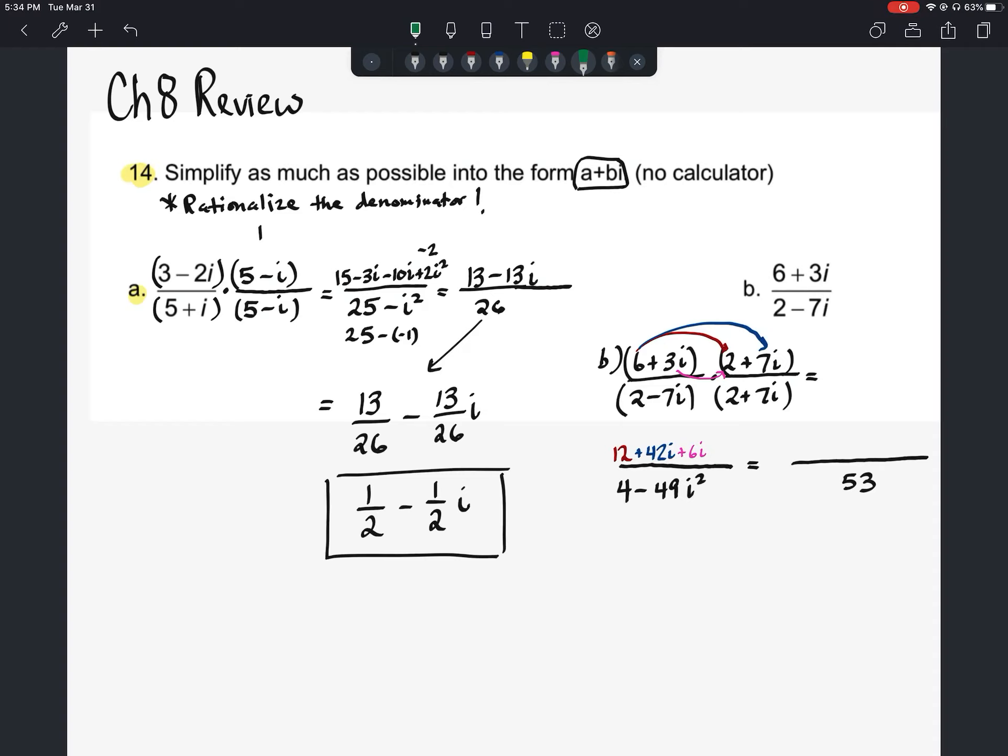And then the last one there, we've got positive 3i times positive 7i would be 21i squared, which would end up being minus 21. And then let's just combine the like terms. Negative 21 and 12 should give us negative 9. And then 42i plus 6i would be 48i.